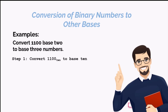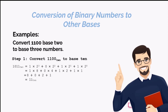Remember, to convert base 2 numbers to base 10, we multiply each of its digits by 2 — that's the base — raised to its positional power, then add the results. So 1011 base 2 equals 1 times 2 raised to power 3, plus 0 times 2 raised to power 2, plus 1 times 2 raised to power 1, plus 1 times 2 raised to power 0. That equals 1 times 8 plus 0 times 4 plus 1 times 2 plus 1, which equals 11 base 10.